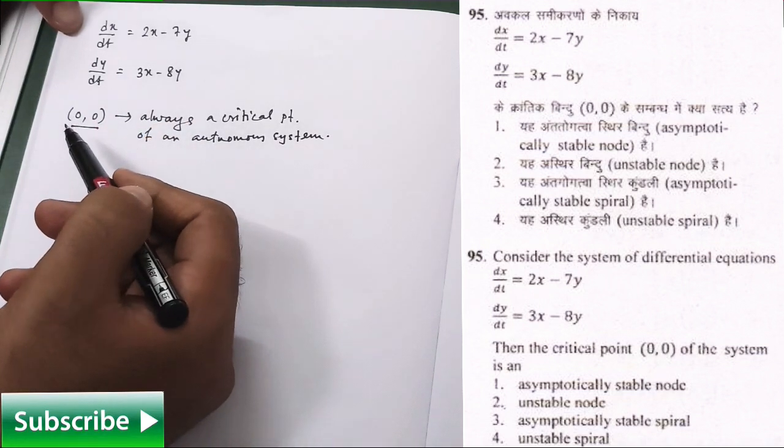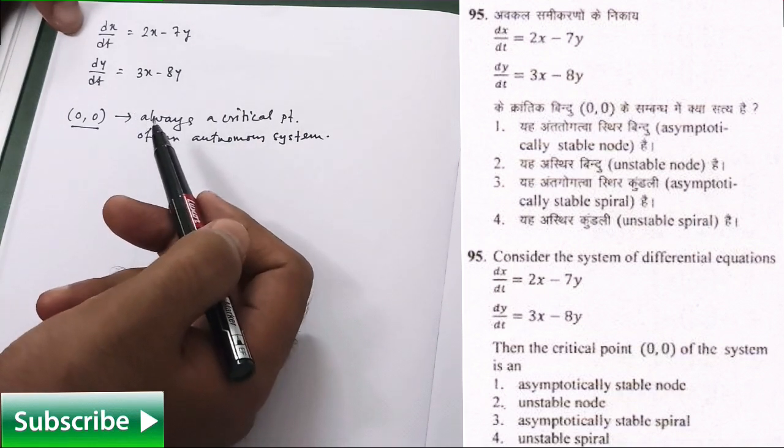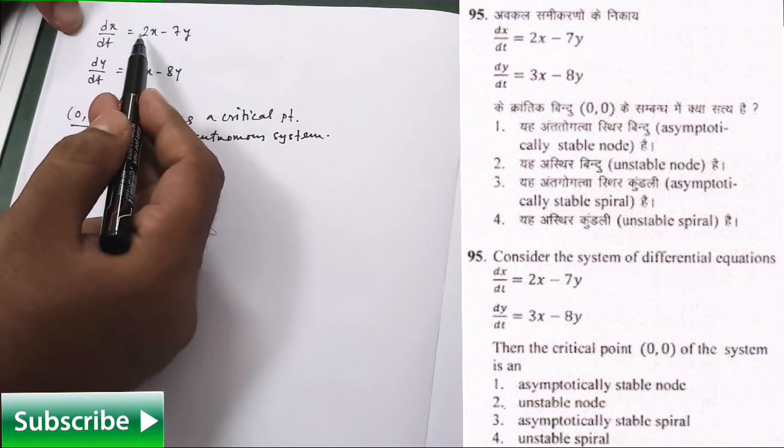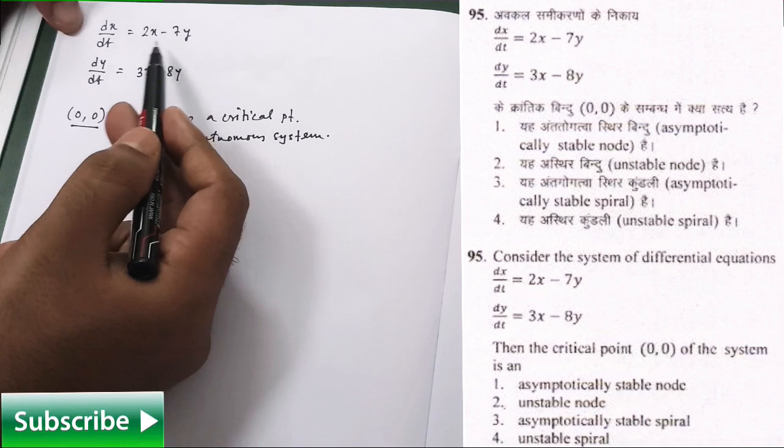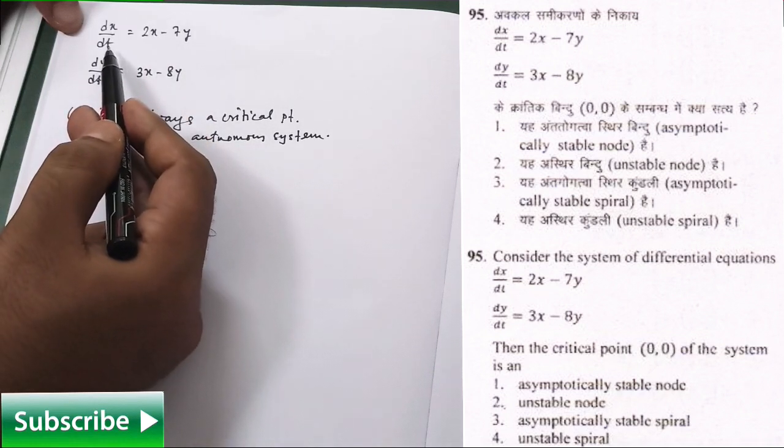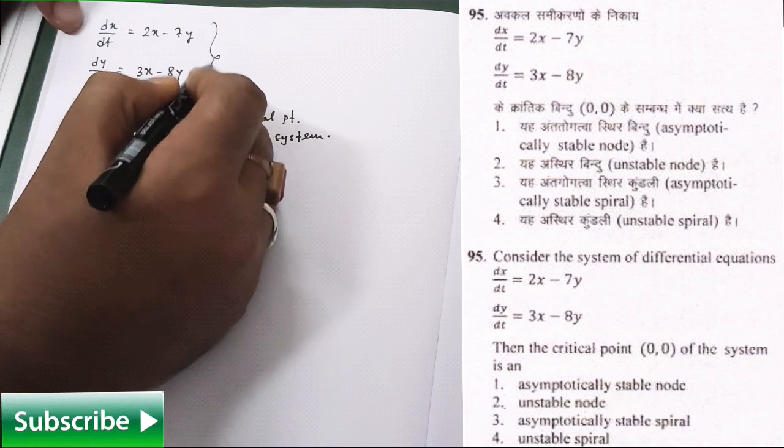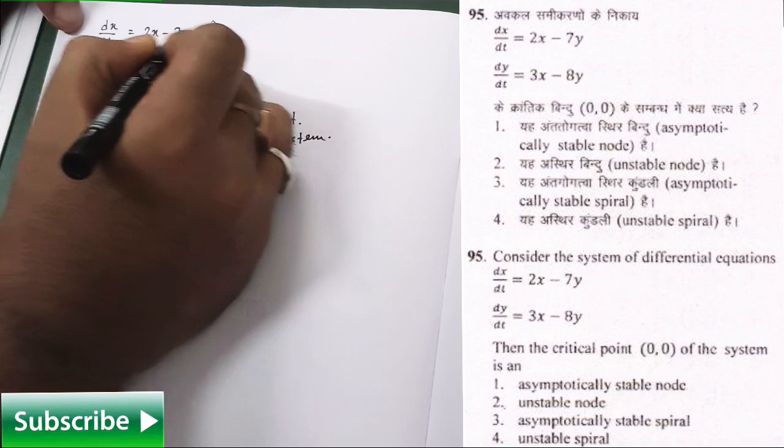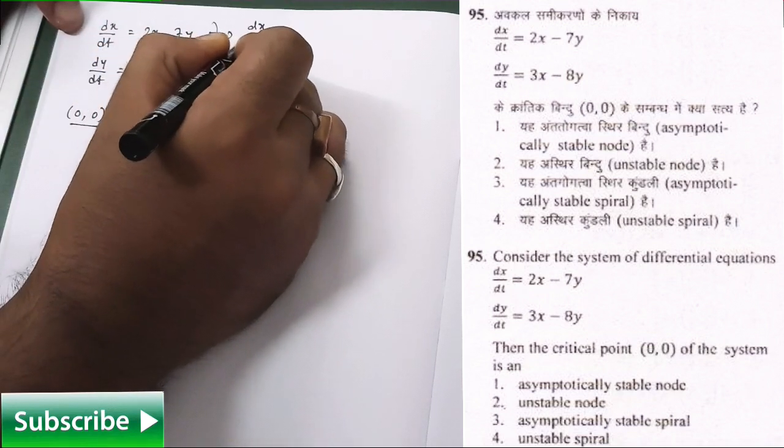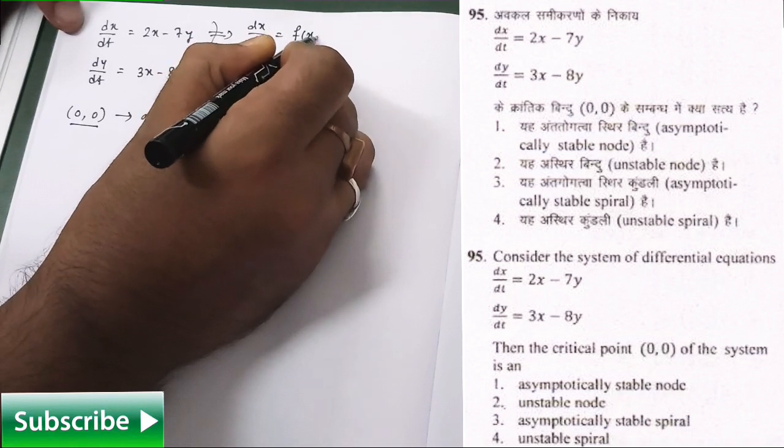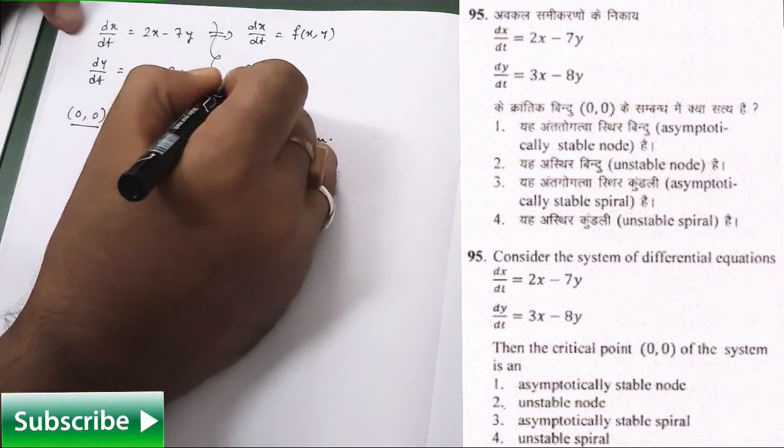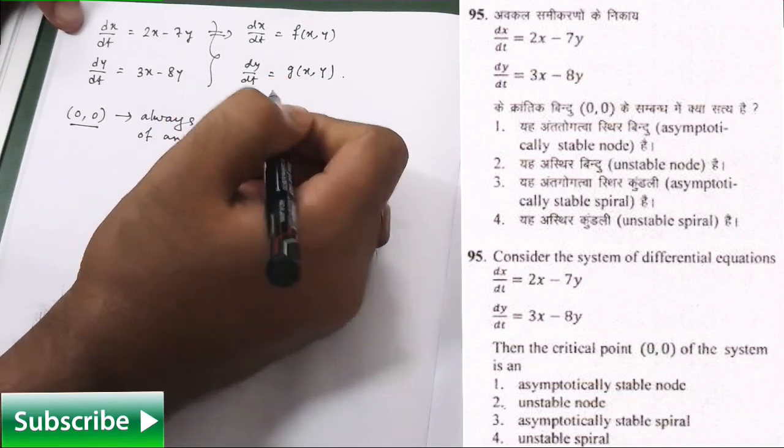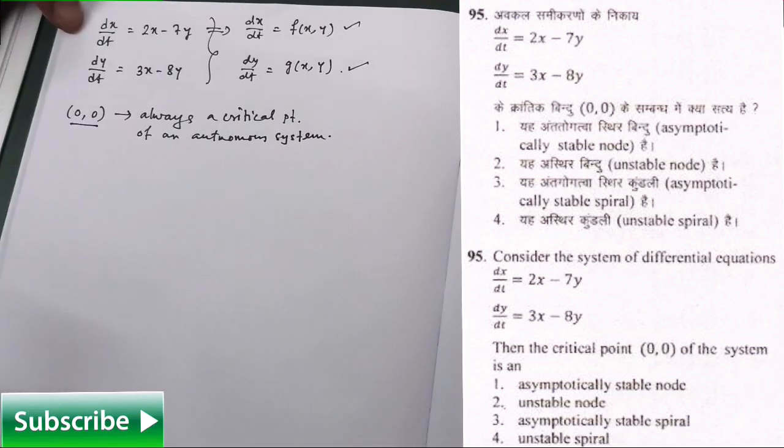But you should know that (0,0) is always a critical point of a given autonomous system. This is actually an autonomous system where your x and y are dependent variables and t is the only independent variable. So, how to tackle this kind of problem? For that purpose you simply write dx/dt is equal to some function f(x,y). Similarly dy/dt is equal to function g(x,y). Fine, these two things we have in our head.